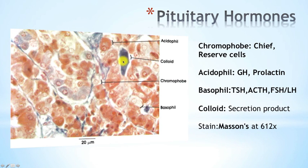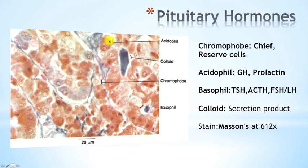Under a Mason stain at 612x magnification, we can identify chromophobes, which produce nothing, as well as acidophils — which are the lactotrophs and somatotrophs — and basophils — which are the thyrotrophs, gonadotrophs, and corticotrophs. You would also have your colloid here, which is essentially secretion material or secretion products.